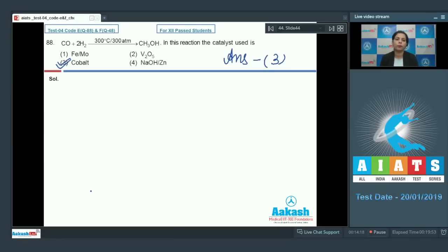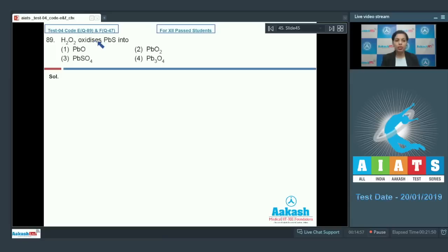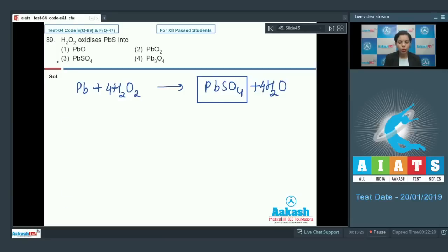Question number 89: H2O2 oxidizes PbS, lead sulfide. This is the reaction in which H2O2 is showing its oxidizing nature. During that, there's the formation of PbSO4 and H2O is released. In this reaction, you can clearly see that PbS is getting changed into PbSO4. On that basis, option 3 is the correct option.